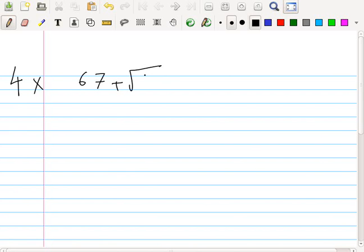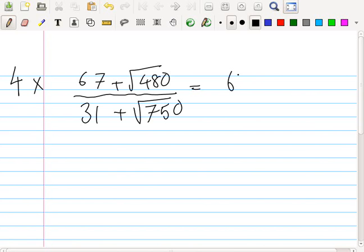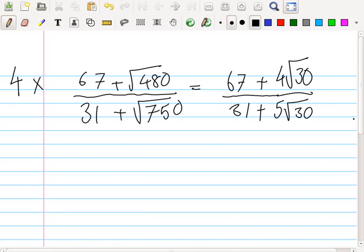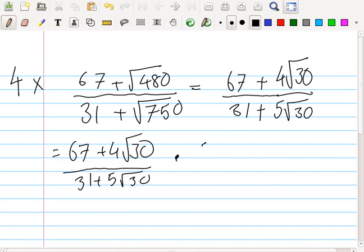67 plus root 480, all over... Okay, please take out your calculator and give me those two roots now. What's the first one? 4 root 3. And the second one? 5 root 3. So really, I don't understand what the problem could be with this because it's the same as the other ones. What do you multiply above and below by? I use 100g. Yeah, which is 31 minus 5.